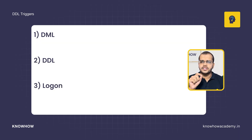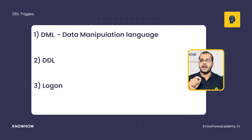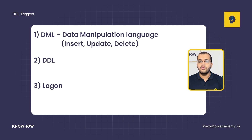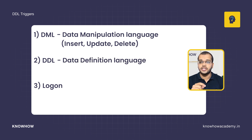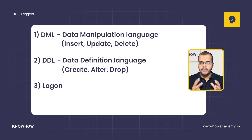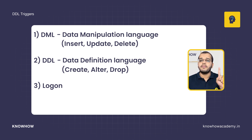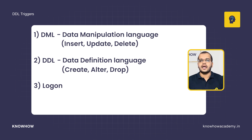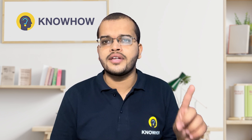DML triggers — data manipulation language — have insert, update, and delete events. Under DDL — data definition language — the events are create, alter, and drop. The difference between the DML trigger and the DDL trigger is that DML trigger will be created on a table, while DDL trigger will be applied on the database or on the server.